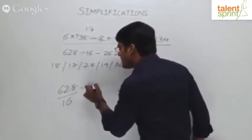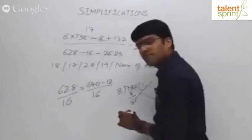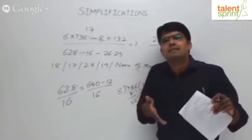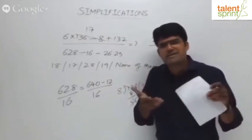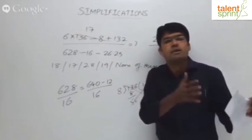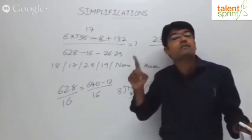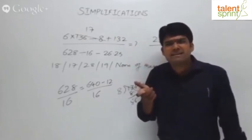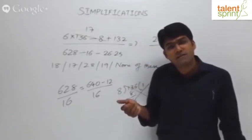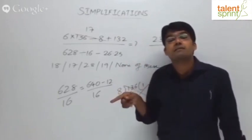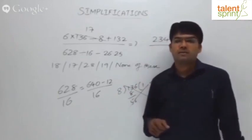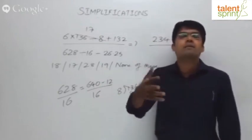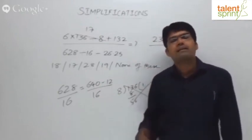Take 628 as 640 minus 12 by 16. You don't have to write this step, it's all visualization. 640 by 16 is 40. 40 minus what's left out: 12 by 16. What is 12 by 16? 3 by 4, which is 0.75. So 40 minus 0.75 is 39.25. Same thing, if you try to do on paper, it's going to take a lot of time.